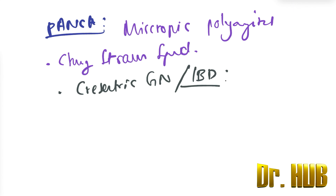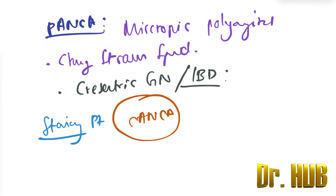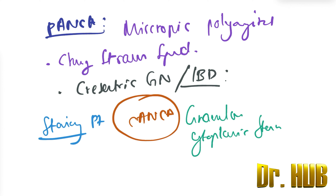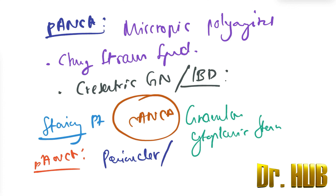Regarding staining patterns: the staining pattern for C-ANCA is granular cytoplasmic staining. The staining pattern for P-ANCA is perinuclear or nuclear staining.